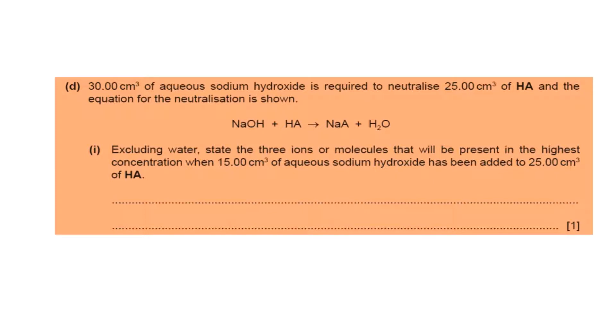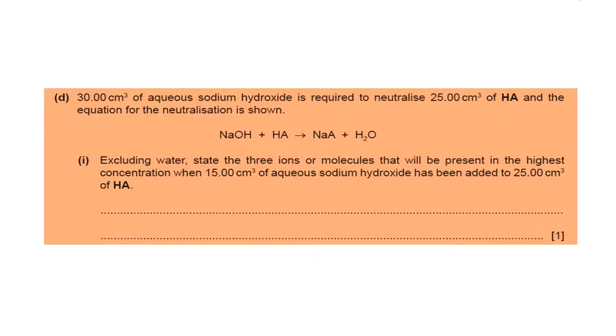Now question D. 30 cm³ of aqueous sodium hydroxide is required to neutralize 25 cm³ of the acid HA. But here, if 15 cm³ of aqueous sodium hydroxide have been added to 25 cm³ of HA, what are the ions or molecules present here? Since 15 cm³ of aqueous sodium hydroxide has been added, half of the acid remains, but NaA, which is the ionic compound, is produced. So the ions are Na⁺, A⁻, and HA.